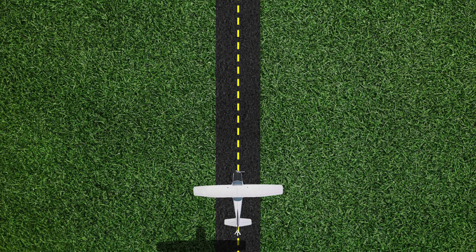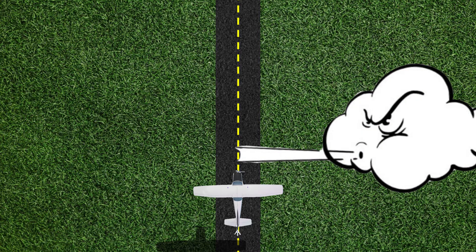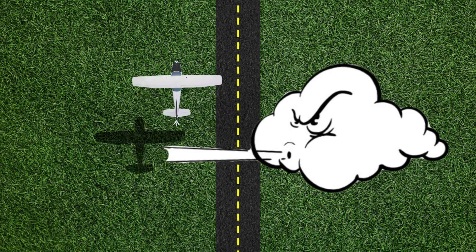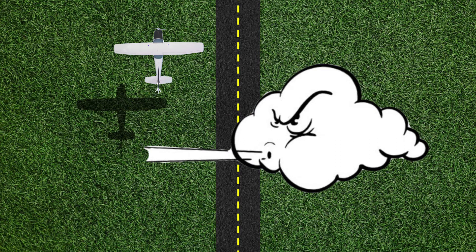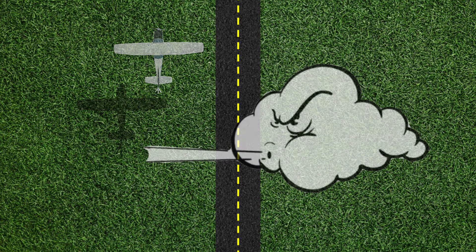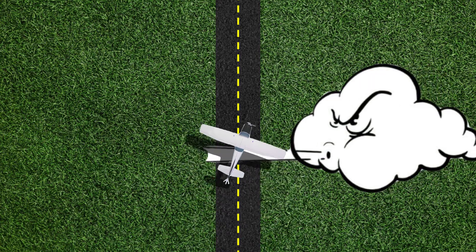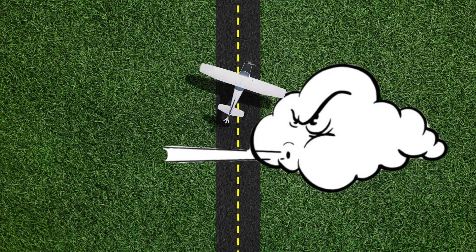Let's say the pilot wants to follow a road, or another straight line reference below them, and the wind is coming from the pilot's right side. If the pilot were to point the nose of the aircraft in the same direction of the road, eventually the wind will blow the aircraft to the left side of the road — not what the pilot wants. To maintain the desired ground track over the road, the pilot must use a wind correction angle to overcome the undesired drift caused by the wind. By angling the nose of the aircraft into the wind, the pilot can overcome the effects of the wind and fly the ground track they intended.